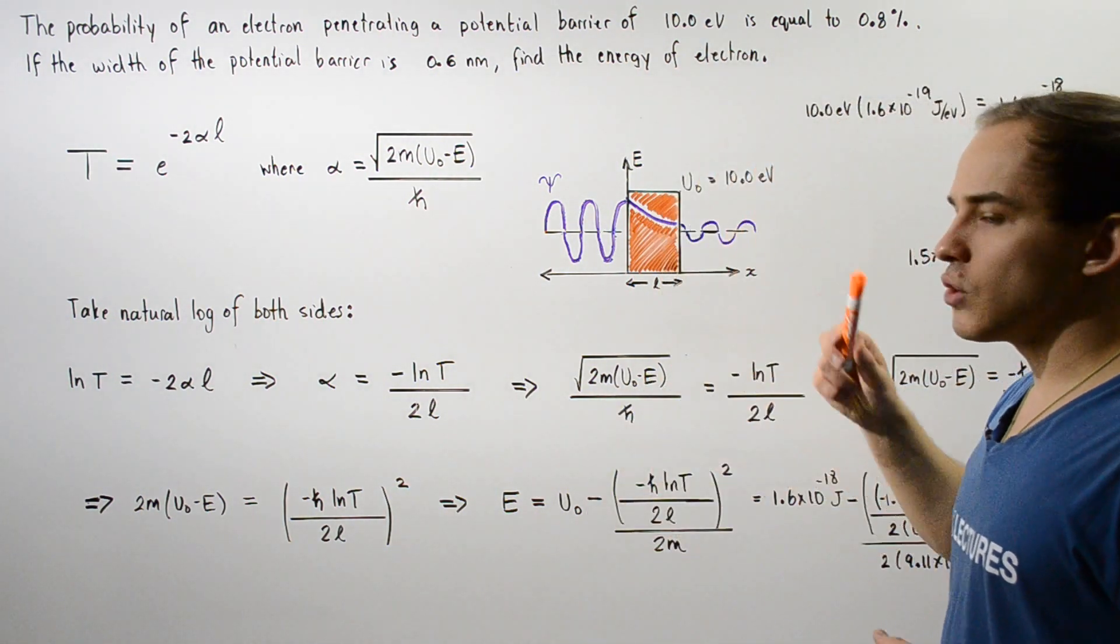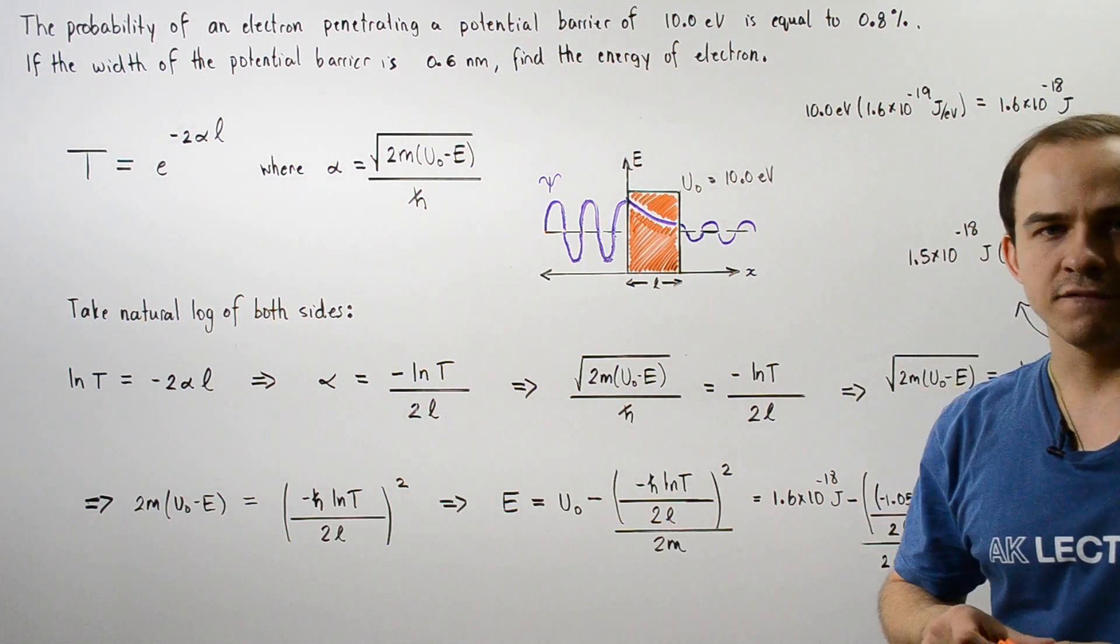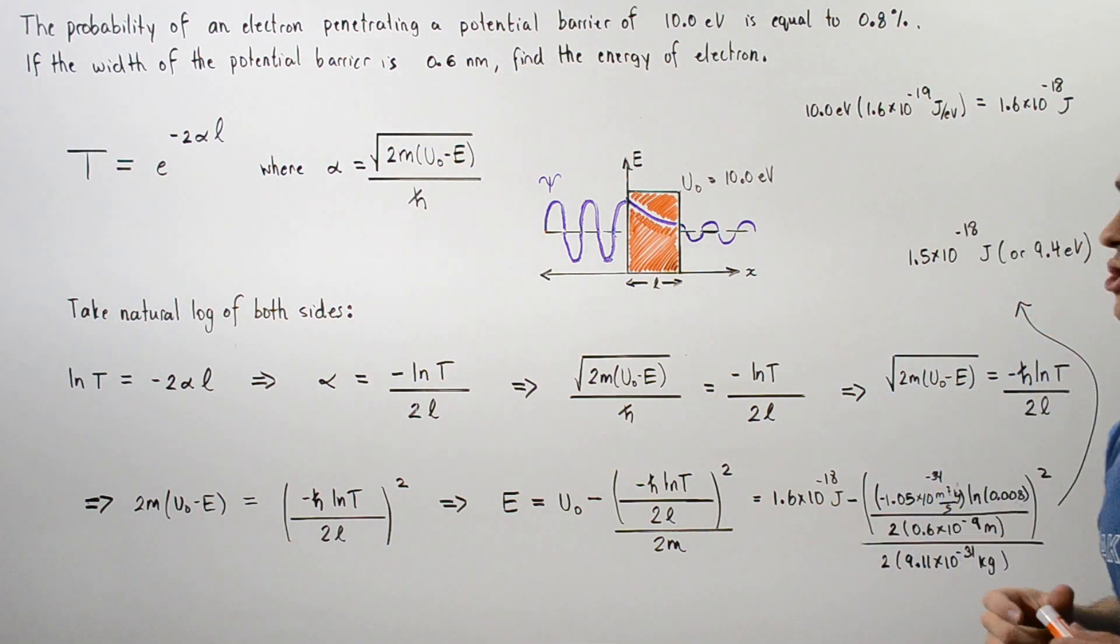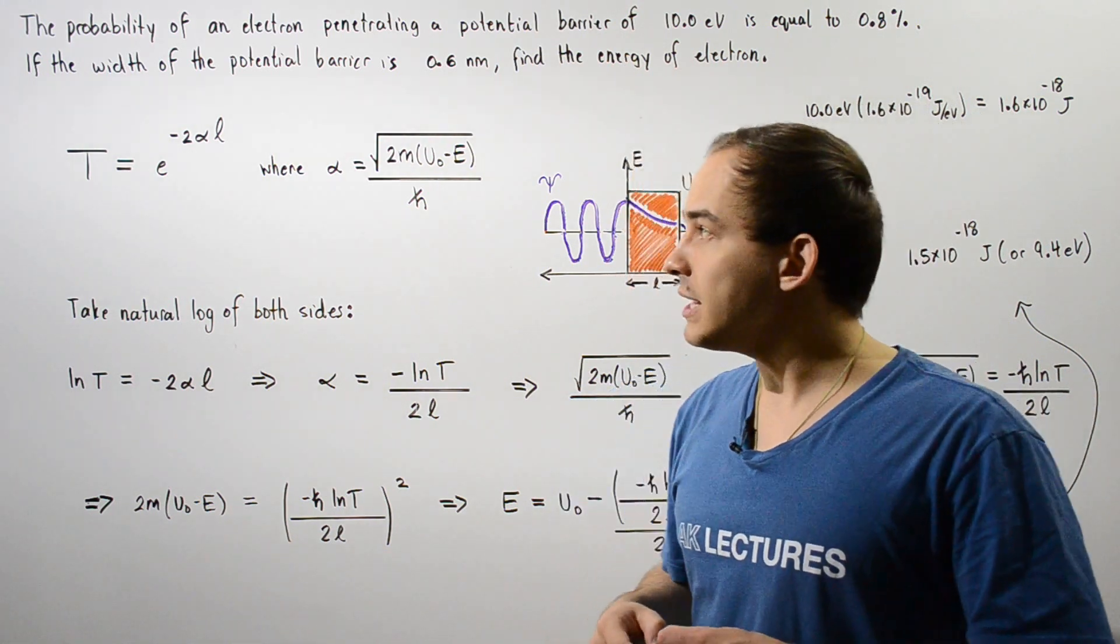10 electron volts can be converted into joules by multiplying 10 electron volts by 1.6 times 10 to negative 19 joules. The electron volts will cancel and we're left with 1.6 times 10 to negative 18 joules.